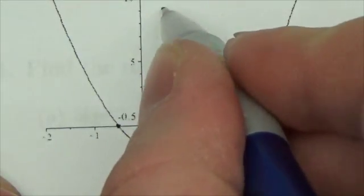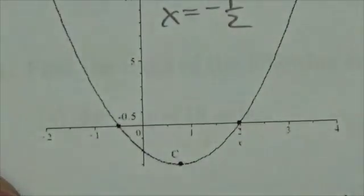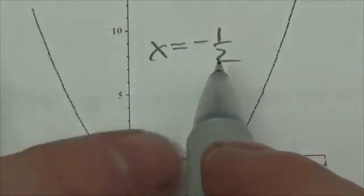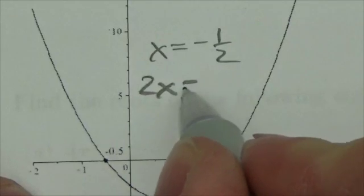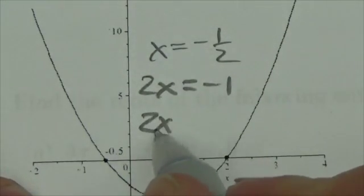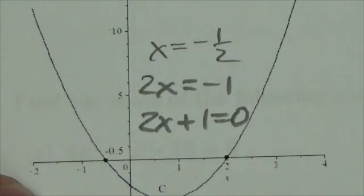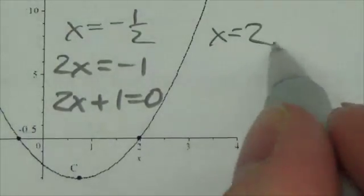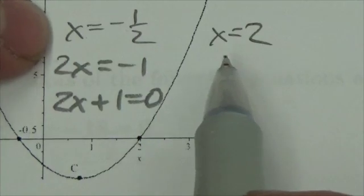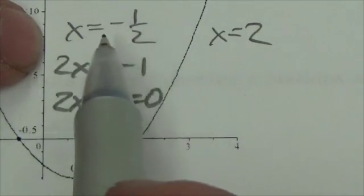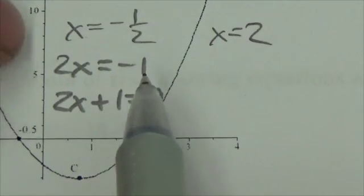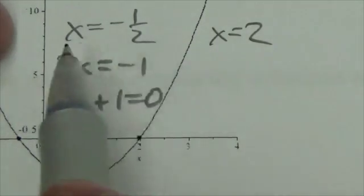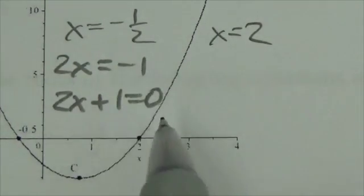I can say that x is equal to negative one half. Now, if that's true, I have to build a factor out of that. What I do is multiply both sides by 2 to get 2x equals negative 1. Then bring the negative 1 over, so 2x plus 1 is equal to 0. So there's one factor. For the other root, if it's not a fraction, I just bring that term over so it's equal to 0.